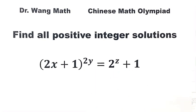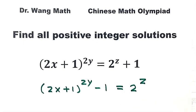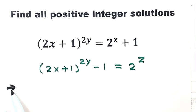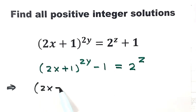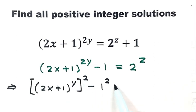First, let's move the 1 to the other side: (2x + 1)^(2y) − 1 = 2^z. Let's rewrite the left-hand side a little bit: [(2x + 1)^y]² − 1² = 2^z.